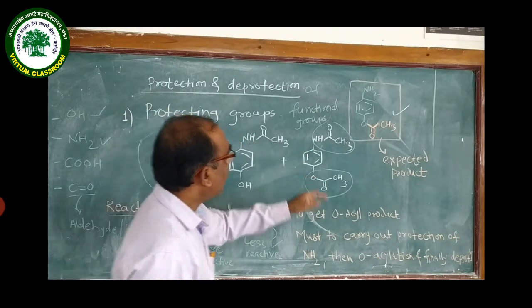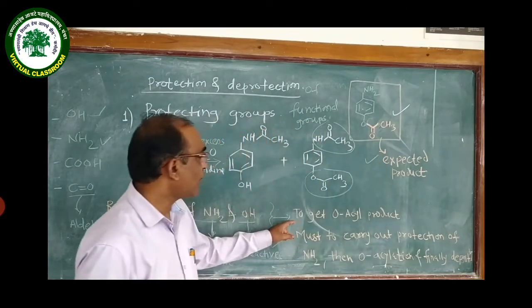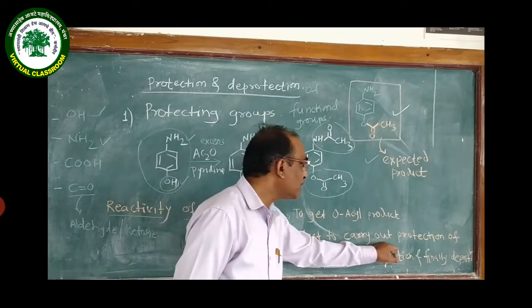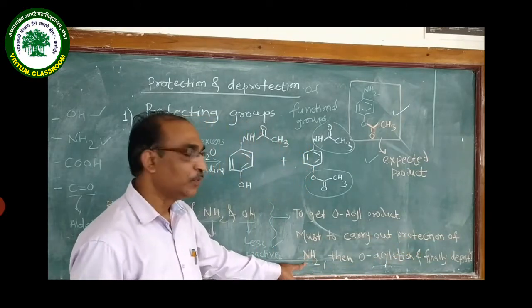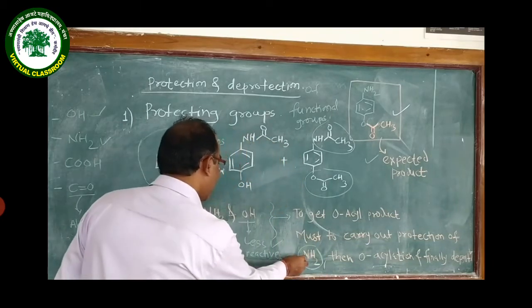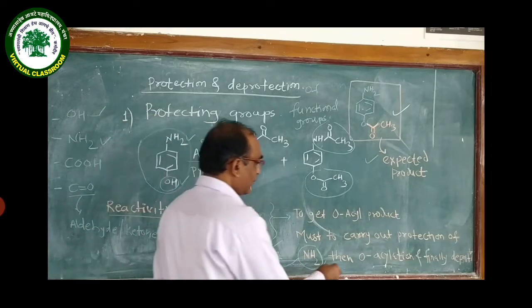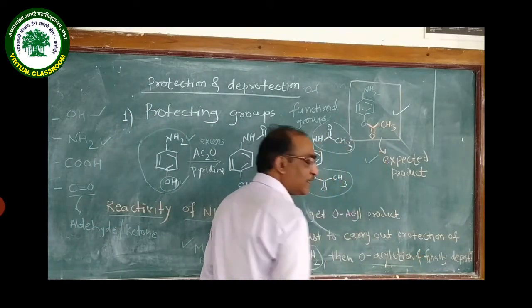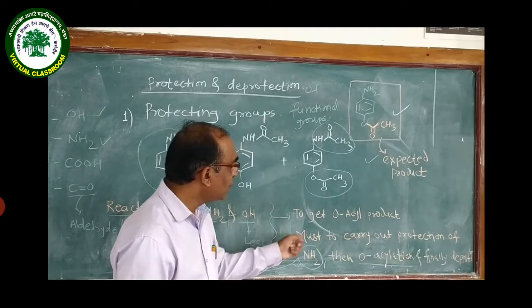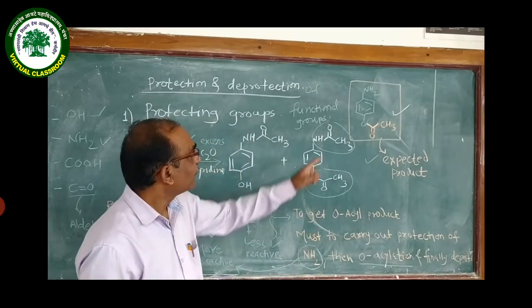To get our desired compound — the O-acetylated product — we must carry out the protection of the NH2 group first, since it is more reactive. So: protect the more reactive functional group first, then carry out O-acetylation. Otherwise, it is difficult to get direct O-acetylation of this product.